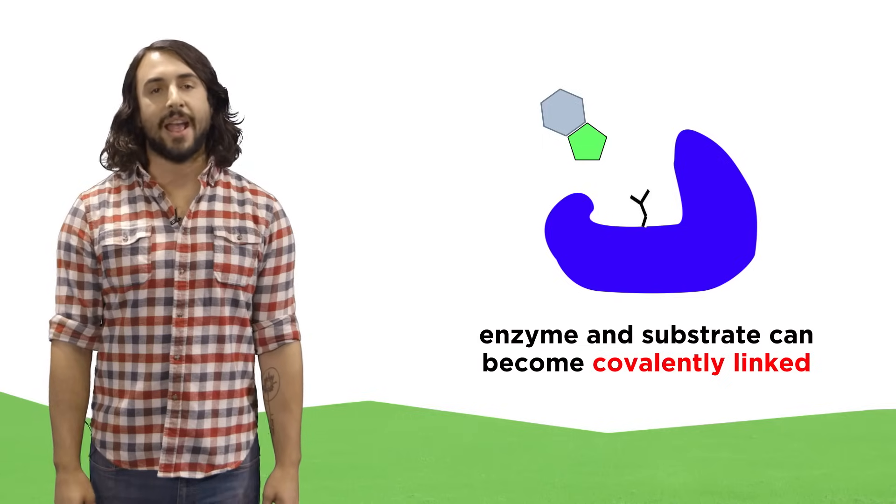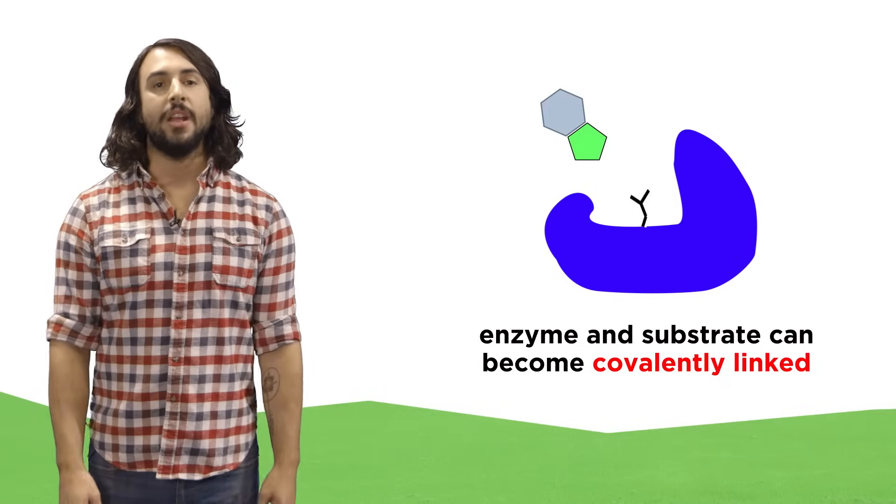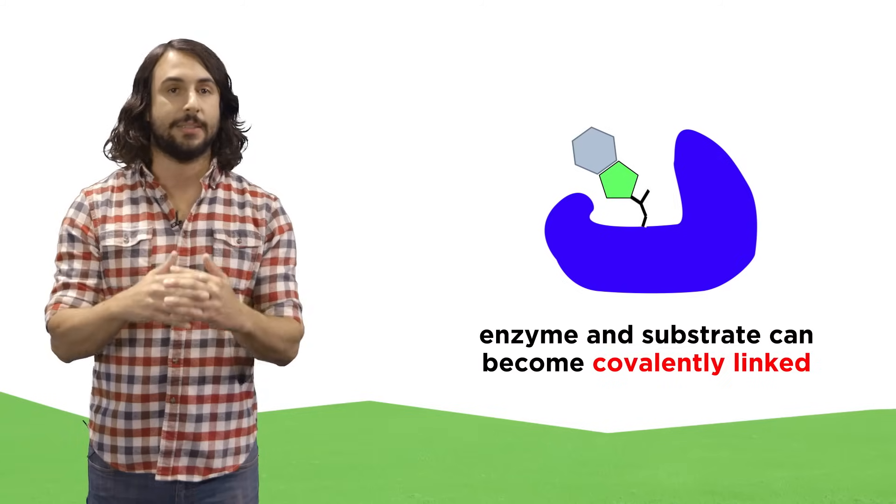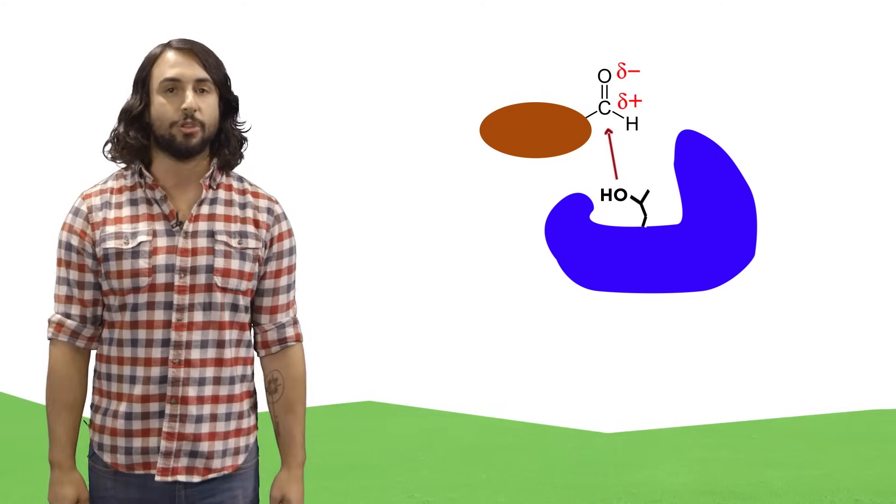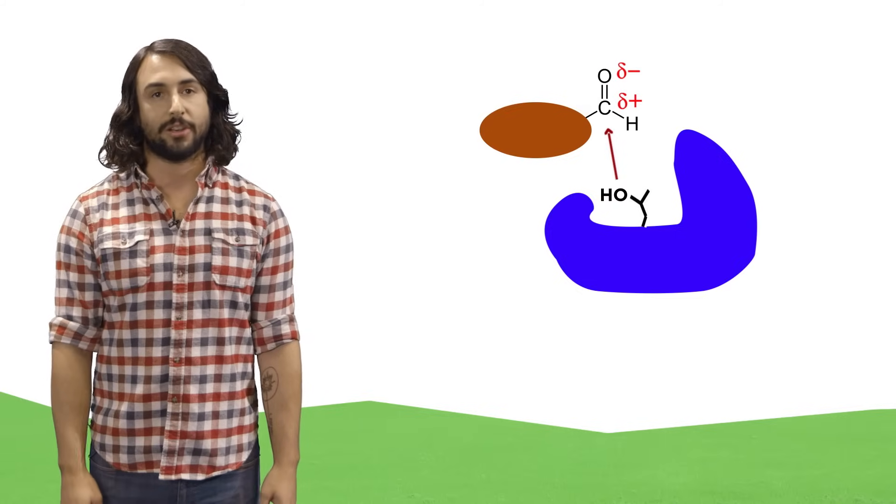Sometimes when an enzyme operates on its substrate, they will temporarily become covalently linked. This can happen if a residue in the active site has a nucleophilic group, like the hydroxyl group on serine, which can react with an electron deficient atom in the substrate, kind of like an SN2 reaction.